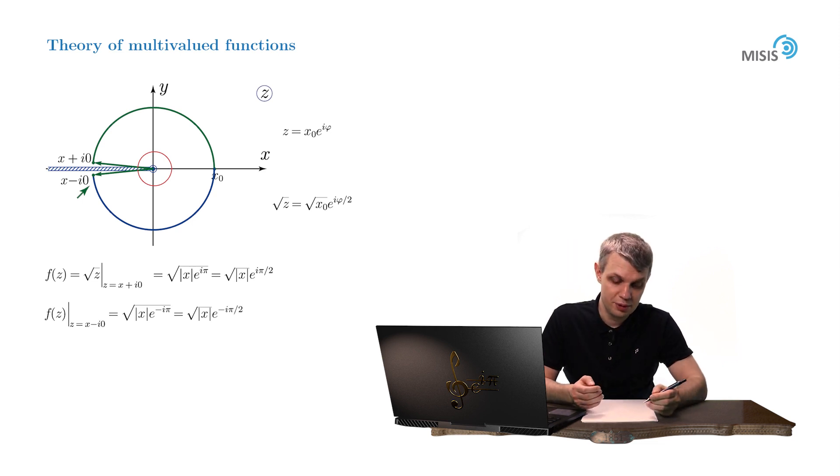But wait a little. What about the strictly negative real numbers? Well, they are positioned right inside the branch cut. And the value of the square root function for this direction of the branch cut is ill-defined there.